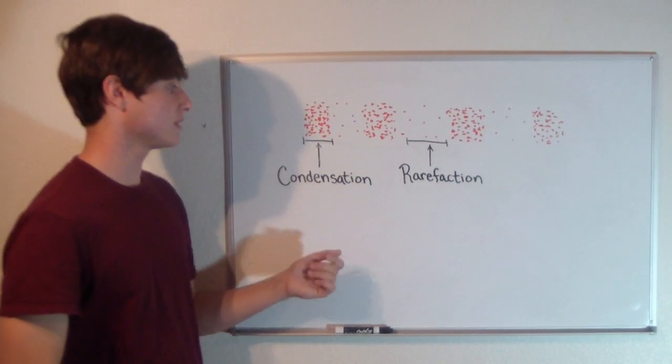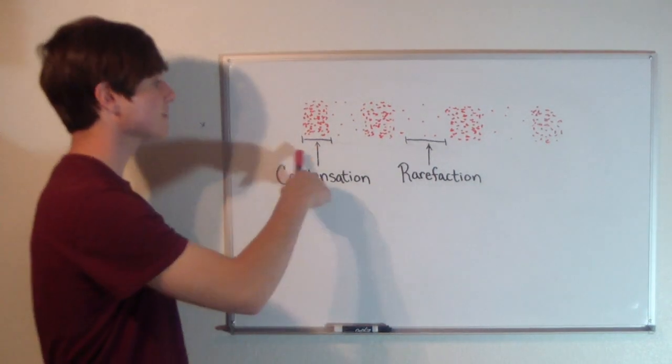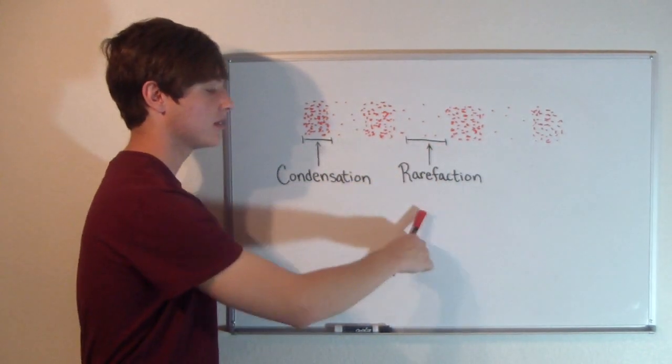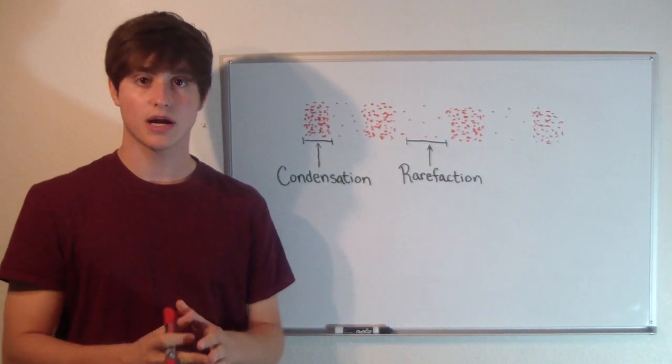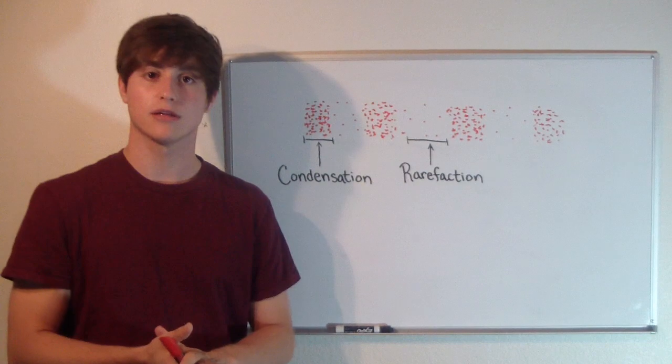This is a diagram representing the pressure in air. The condensed regions are known as condensation. The spread out regions are known as rarefaction. These are caused due to vibrations in the air that spread out particles in certain areas and group them together in other areas.